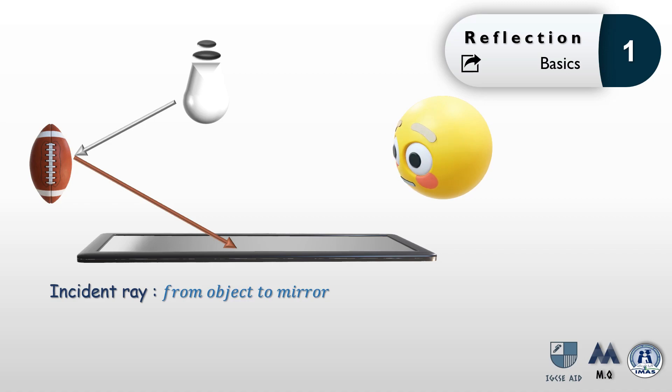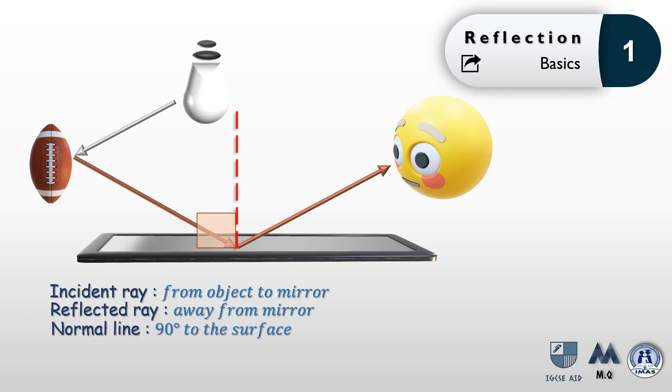The light falling on the mirror is called the incident ray. The plane mirror will reflect it away from the surface. This ray is called the reflected ray. For easier constructions, you need to construct a normal line, which is a line that is 90 degrees to the surface of the mirror at the point where the incident ray hits the mirror.